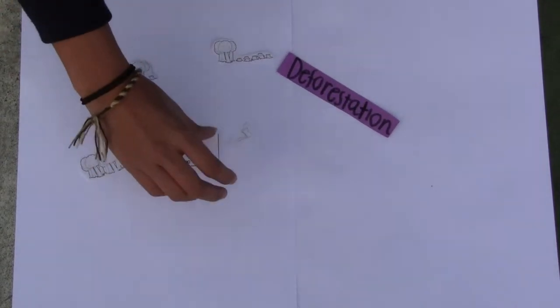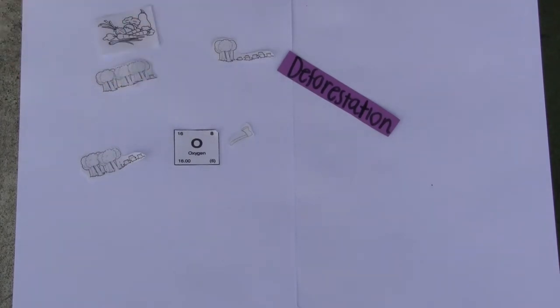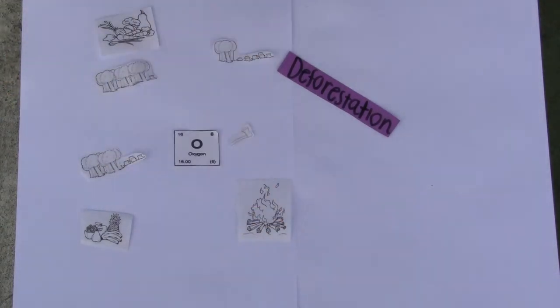An example of unsustainable consumption is deforestation. Forests are one of the most important things in our world. They produce oxygen and the vegetables and fruits we eat every day. We depend on trees for our houses, fire, fuel, and furniture.